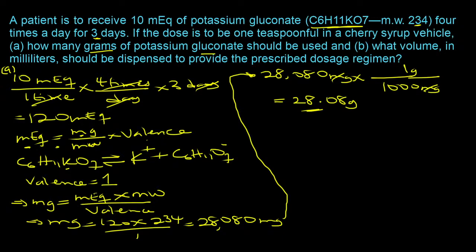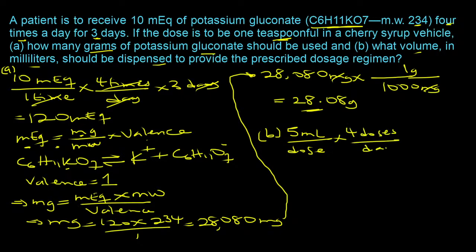For Part B, the question asks what volume in milliliters should be dispensed. Each dose is one teaspoonful = 5 ml. The patient takes 4 doses per day for 3 days: 5 ml/dose × 4 doses/day × 3 days = 60 milliliters to dispense.